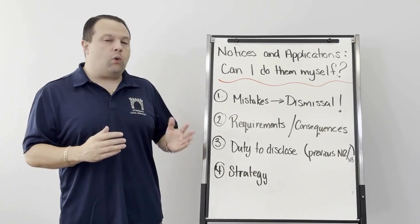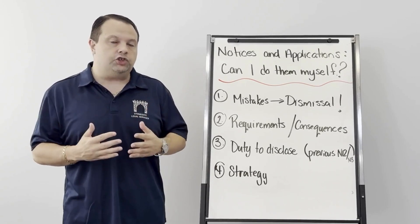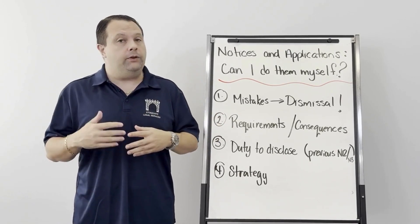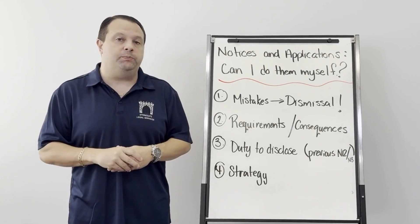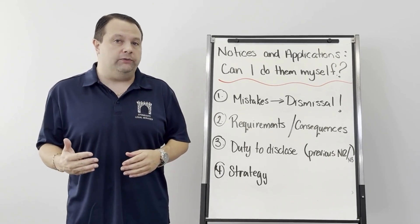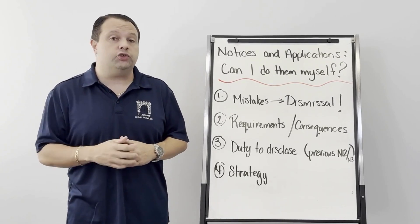Number two, requirements and consequences. You need to know that on each notice that you do, there is requirements and there are consequences. And the best example of this would be the N-12. There's certain requirements of the N-12 and once you give an N-12, there's a consequence that once you serve a notice, you cannot unserve a notice.